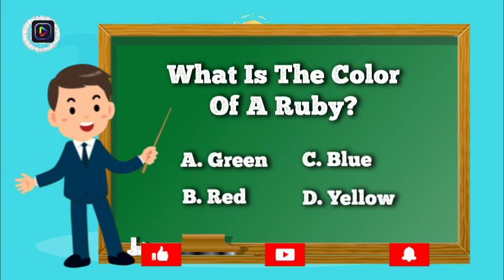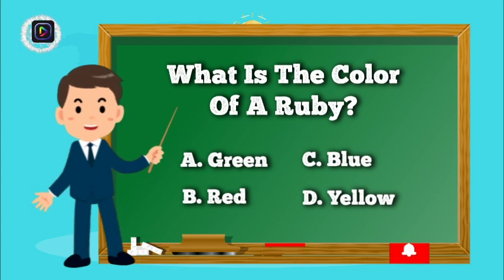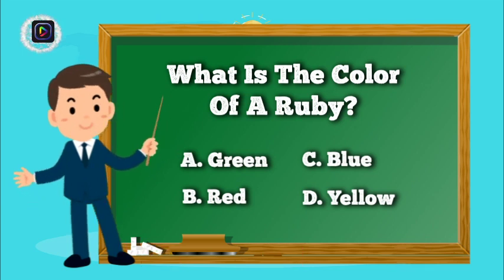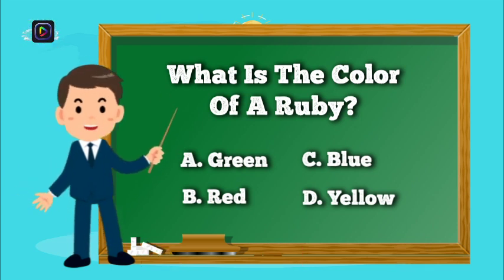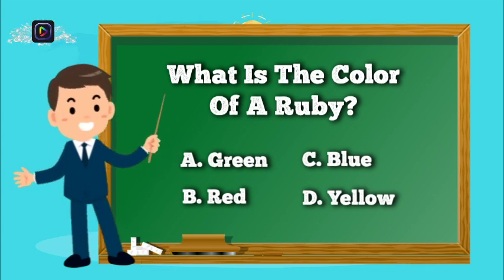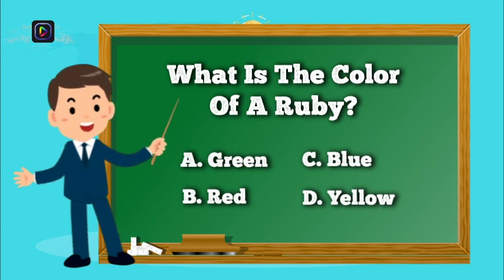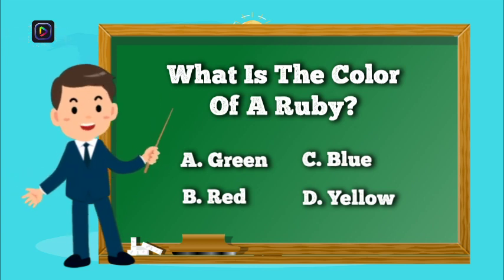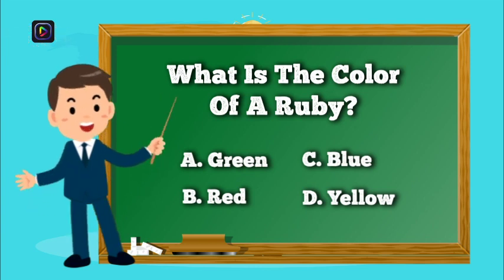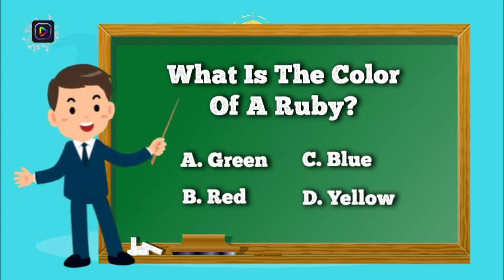What is the color of a ruby? Is it A, Green? B, Red? C, Blue? Or D, Yellow?